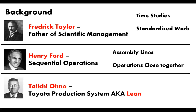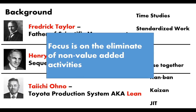Last is Taiichi Ohno, who made his big contribution during the 1960s with the Toyota Production System, which also later became known as Lean. What he came up with was this whole idea of getting rid of waste from the process and, even more importantly, several different methods and techniques to tackle waste. With him came things such as Kanban, Kaizen, as well as Just-in-Time — the idea of getting your tooling or inventory on your floor just when you need it. All three men focused on the elimination of non-value-added activities.